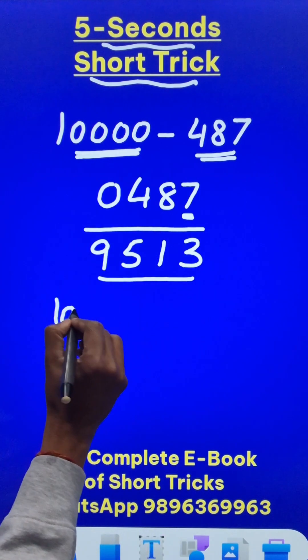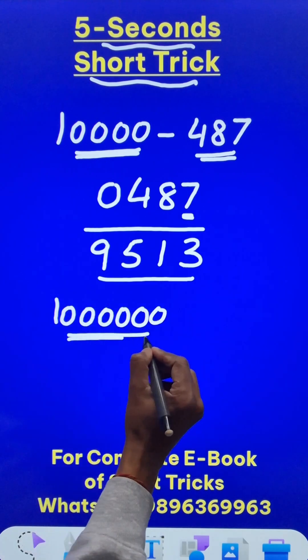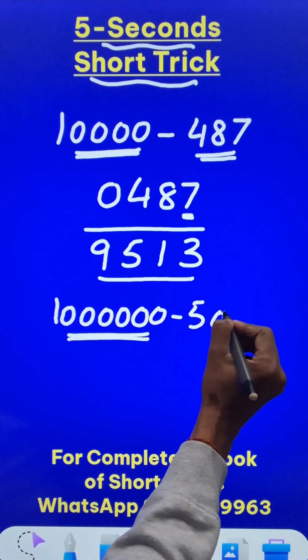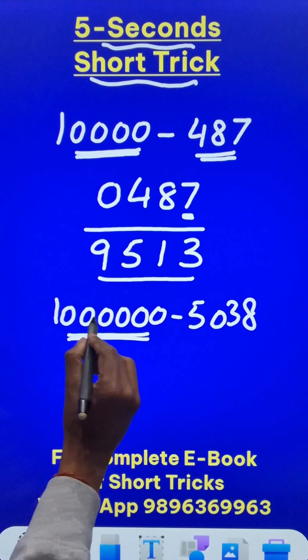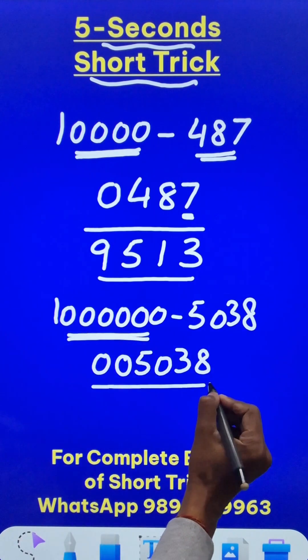Can we do one more like 1 followed by 1 2 3 4 5 6 digits that is 6 zeros and then we have to subtract 5038 from this 4 digit number. So 6 zeros means you have to put 2 more zeros in front of 5038 and now you will have your answer.